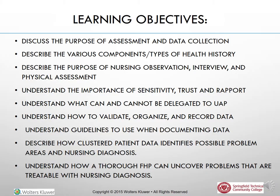Lecture two in a series of three is to discuss the purpose of assessment and data collection, talk about the various components and different types of a health history, describe the purpose of the nursing observation interview and the physical assessment, understand the importance of sensitivity, trust, and rapport when doing a health interview, understand what can and cannot be delegated to unlicensed assistive personnel, understand how to validate, organize, and record data, understand the guidelines to use when documenting data, and talk about how clustered patient data can identify possible problem areas and nursing diagnoses, and also how a thorough functional health pattern can uncover problems that are treatable with a nursing diagnosis.